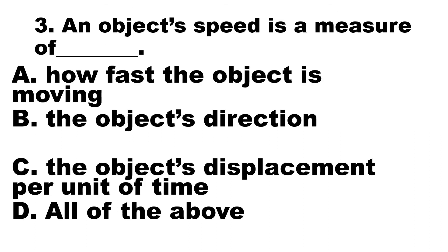Number 3. An object's speed is a measure of blank. A. How fast the object is moving. B. The object's direction. C. The object's displacement per unit of time. D. All of the above.